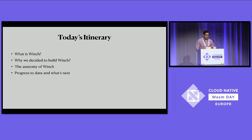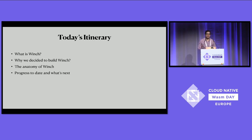Here is today's itinerary: we're going to learn about what Winch is, why we decided to build Winch, the anatomy of Winch, and the progress to date and what's next. My real expectation after this talk is to let you know why you could use Winch in your application if you want to make it faster, and the ways you could use it. I'm not going to go too deep into compilers, but I'll give a high-level view of what happens when you compile your WebAssembly into machine code.